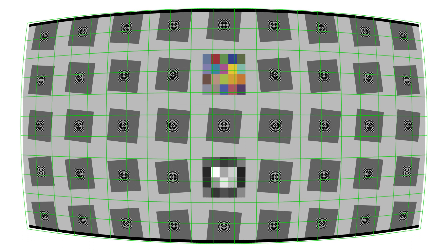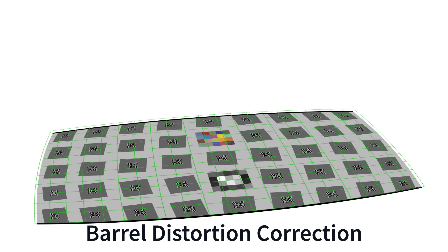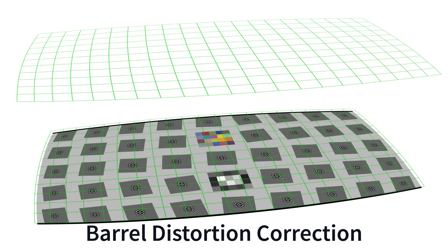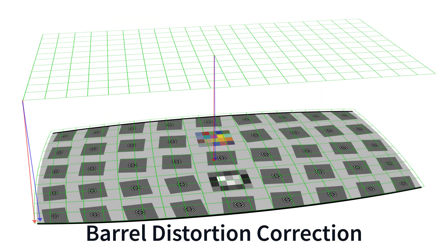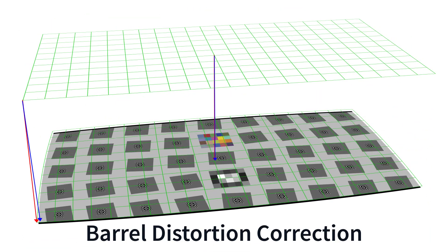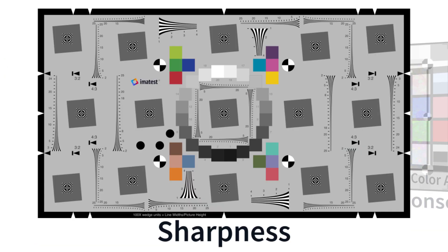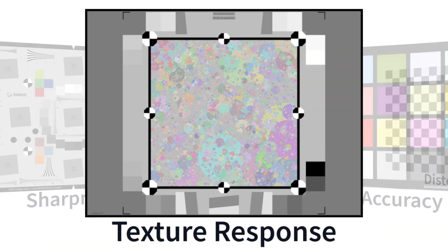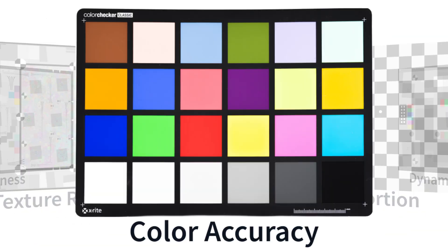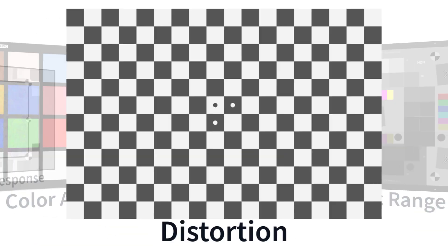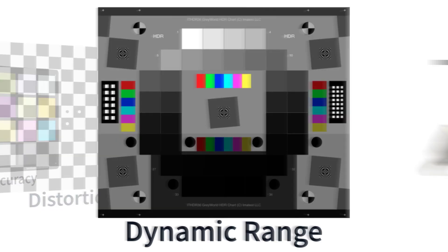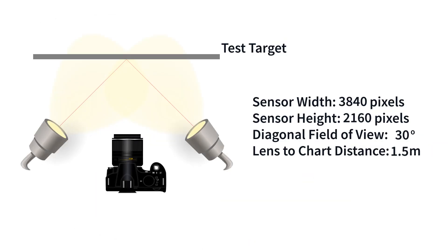Typically, lenses with normal fields of view have a low amount of barrel or pin cushion distortion. This allows for a wide variety of standard planar targets to be used.